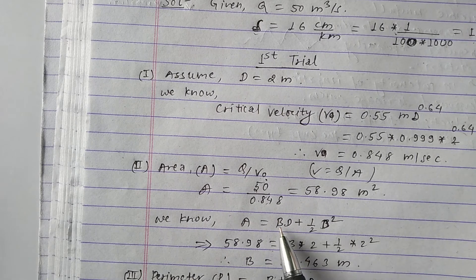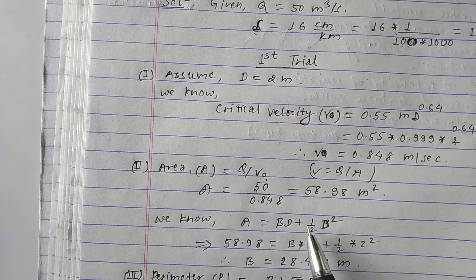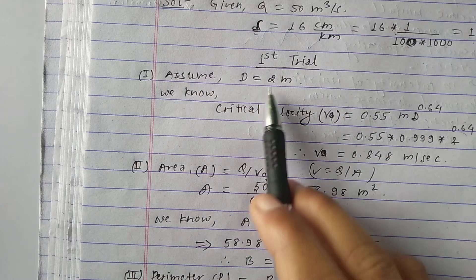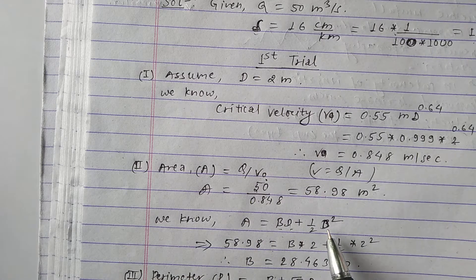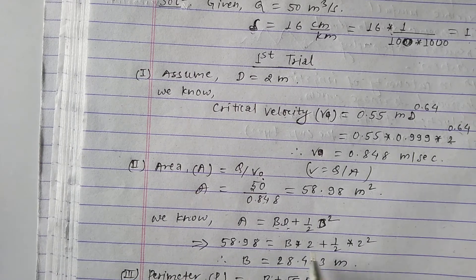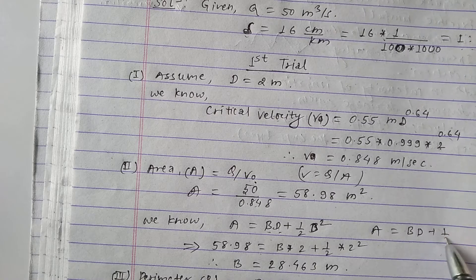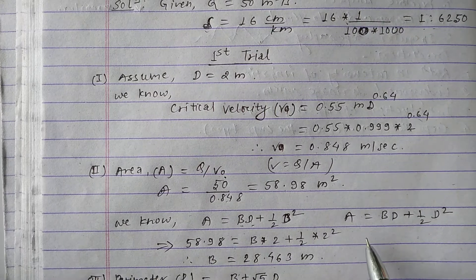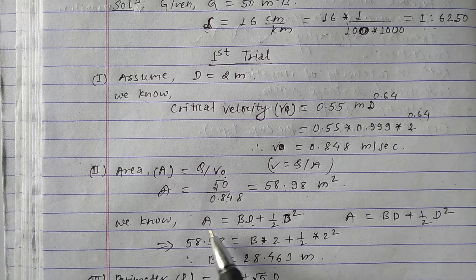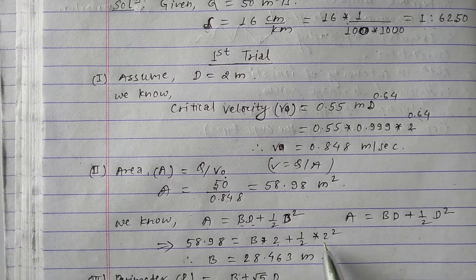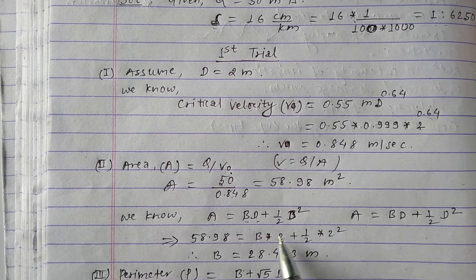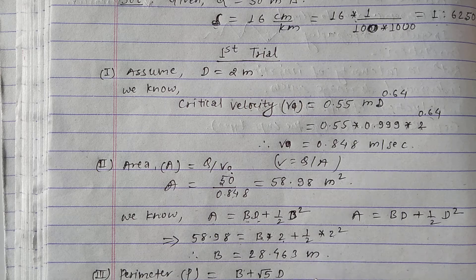We have area A = 58.98 m², but the width b is unknown. For an irrigation canal, the area formula is A = bd + ½d². Substituting A = 58.98, d = 2 m: 58.98 = b(2) + ½(2²). Solving this equation, we get b = 28.463 m.